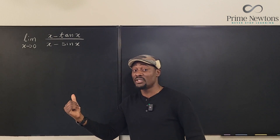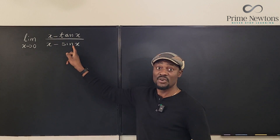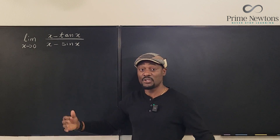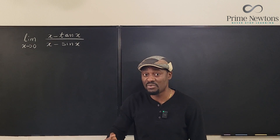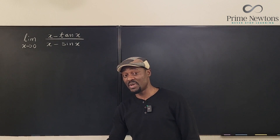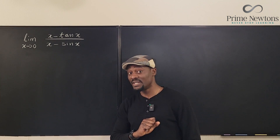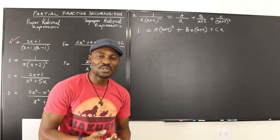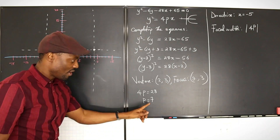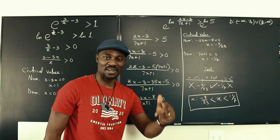If we plug it in, zero times zero is zero, sine of zero is zero, so it's going to be zero over zero — an indeterminate form which we cannot do anything with. So we have to do some algebraic manipulation or apply L'Hôpital's rule. The problem is you have to decide which one you're going to apply and when, because we're going to need both.